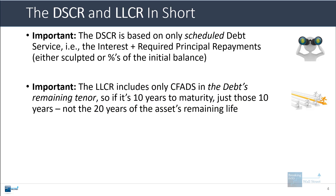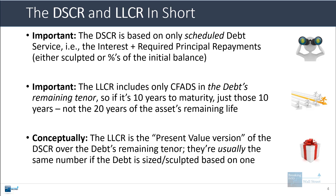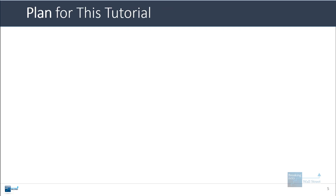That's actually a different ratio: the project life coverage ratio, or PLCR. Conceptually, the loan life coverage ratio is the present value version of the debt service coverage ratio over the debt's remaining tenor. They're usually the same number if the debt is sized or sculpted based on one. But as I'll show you in a little bit, there are exceptions and cases where they diverge, especially as you go further into the holding period. So that's the short version.